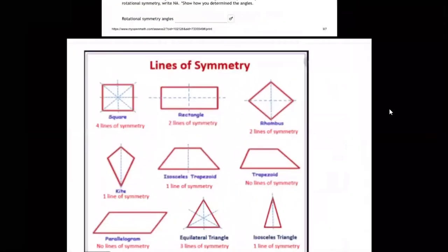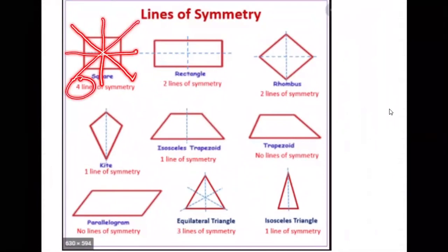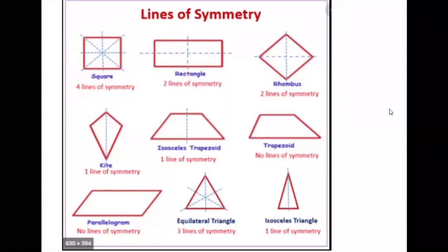Lines of symmetry are lines that fold the shape in half. For a square, you can have a line right down the middle, another line, and then two diagonals — that's four lines of symmetry. A rectangle has two, a rhombus has two, a kite has one, an isosceles trapezoid has one, and a regular trapezoid has none.